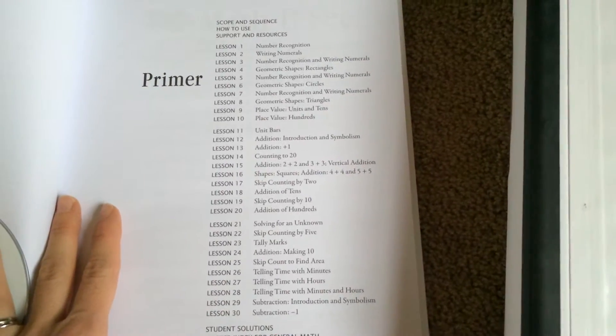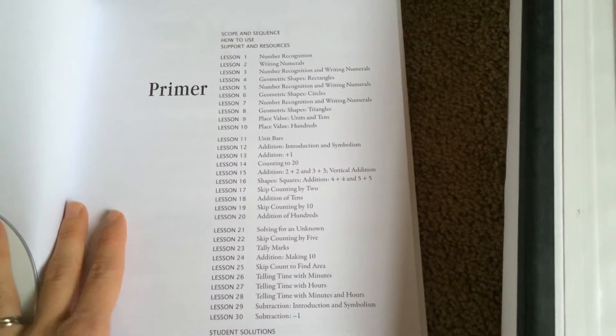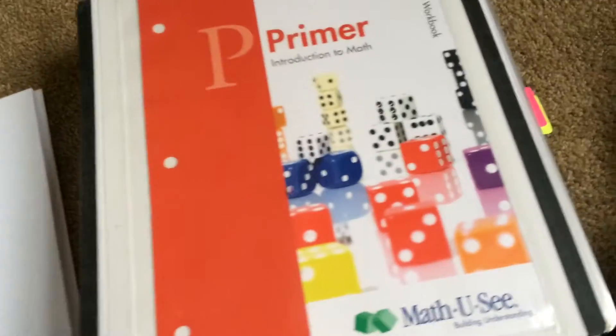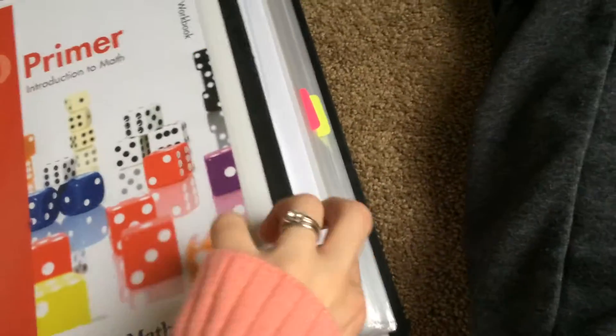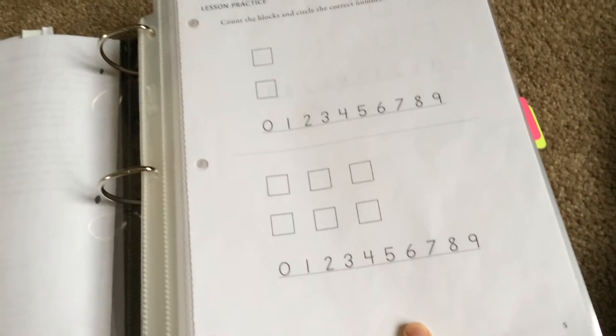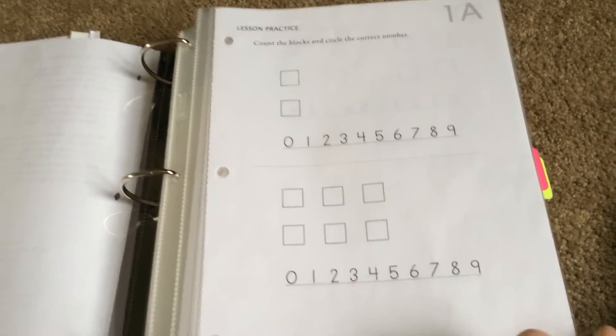You can see here the different topics that they have. They basically are teaching them the numbers 0 through 9, because that's how you should be counting when you're doing a base 10 system. And then they go into introduction to other topics in future books.